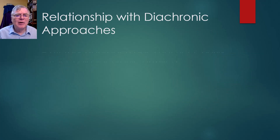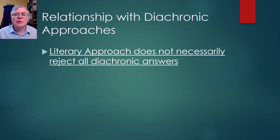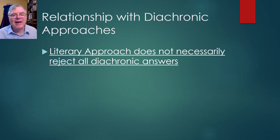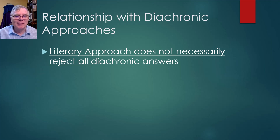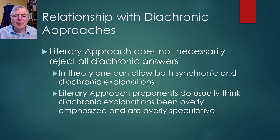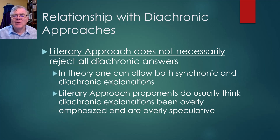The literary approach does not necessarily have to reject all diachronic answers. You could acknowledge that a text does have a literary history and that we can trace some of that history, but nonetheless what we're interested in is the meaning of the final form of the text. In theory, you can have both synchronic and diachronic explanations, though in practice literary approach proponents usually think that diachronic explanations have been overly emphasized and are overly speculative.